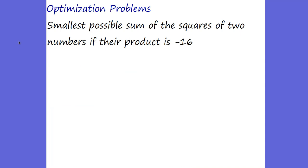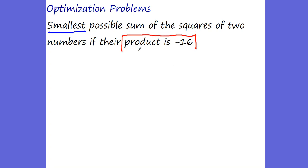Right away in this first problem, it says: what is the smallest possible sum? You can see 'smallest' — they're asking you what's the minimum, what's the optimization of this problem. We are looking for the smallest possible sum of the squares of two numbers if their product is 16. The key to doing optimization problems is you need two equations. The first equation is the product of two numbers equals negative 16. X times Y equals negative 16. That is one of the equations — the constraint.